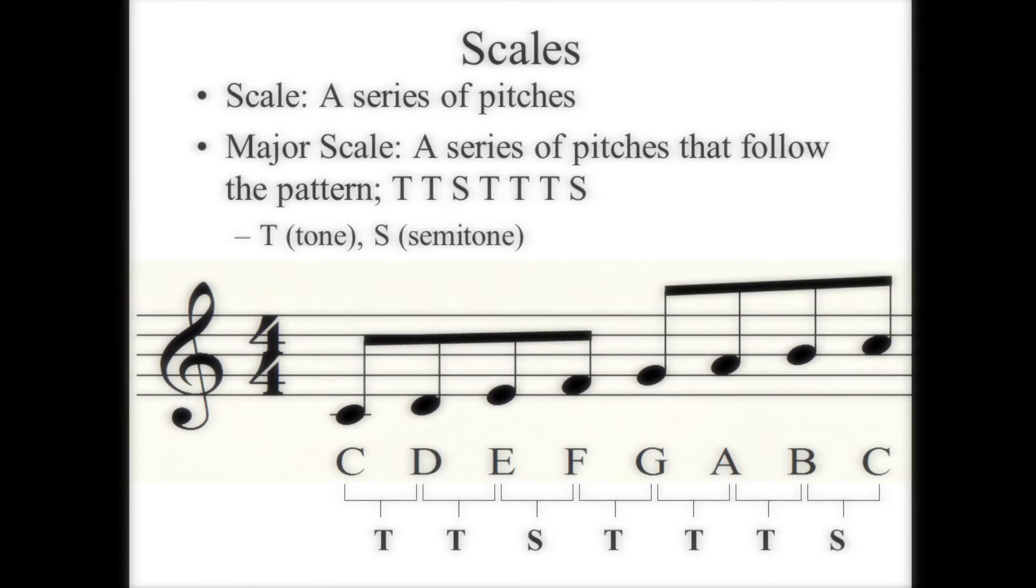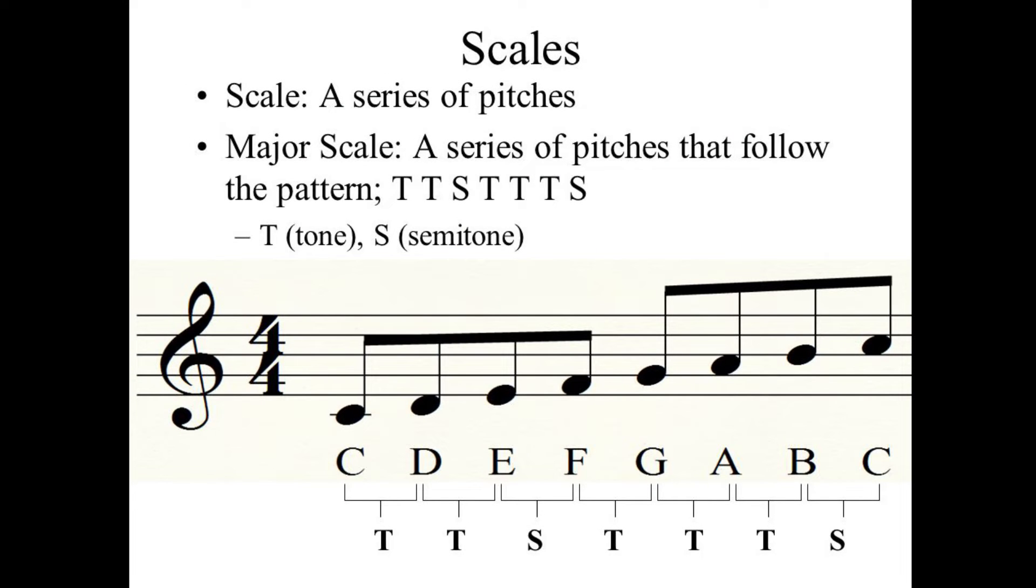So let's go back to the C major scale now. From C to D, that's a tone. From D to E, that's a tone. From E to F is a natural semitone. Then from F to G, that's a tone. G to A, it's a tone. A to B, that's a tone. And finally, from B to C, that's a semitone. So that's the formula for any major scale: TTS, TTTS.